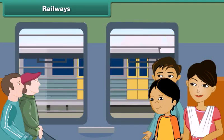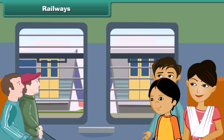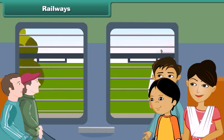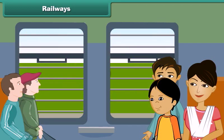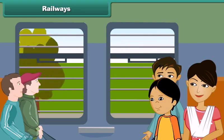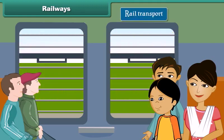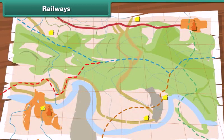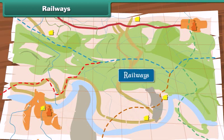Railways: Transportation of goods and passengers on rail lines through trains is known as rail transport. The ways or paths on which trains move are called the railways.